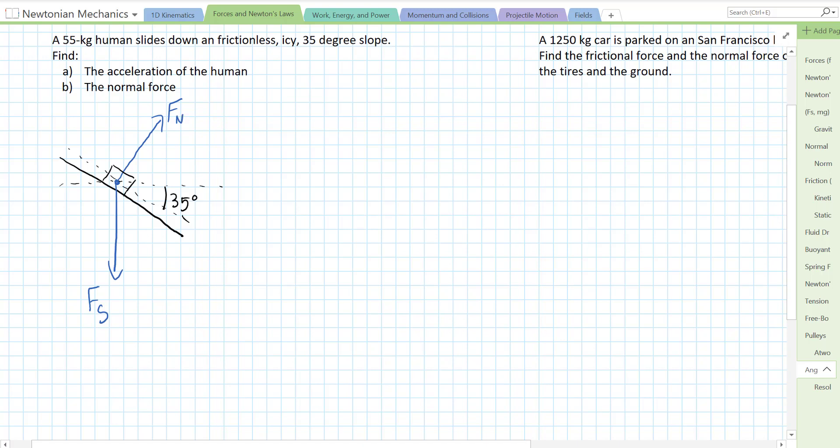Now we need to break our vectors into components, and in this case, since our object is accelerating down the slope, let's just do a little downward acceleration there, we want to resolve our vector into components that are parallel to the slope and perpendicular to the slope.